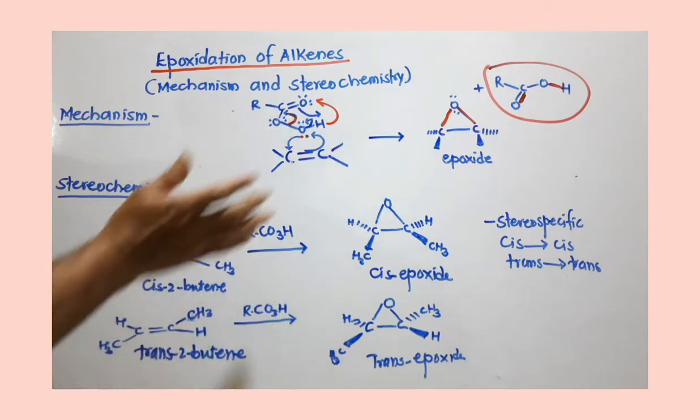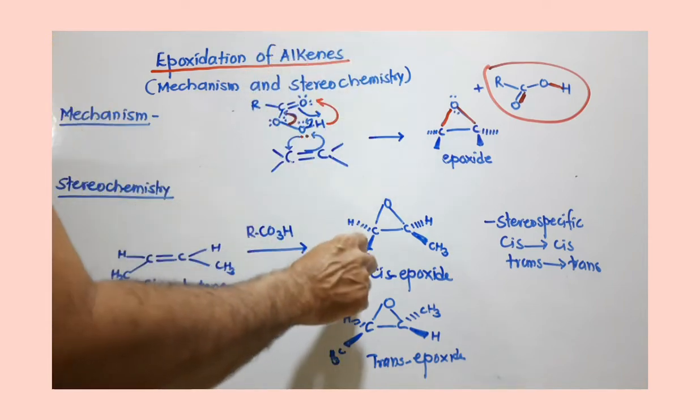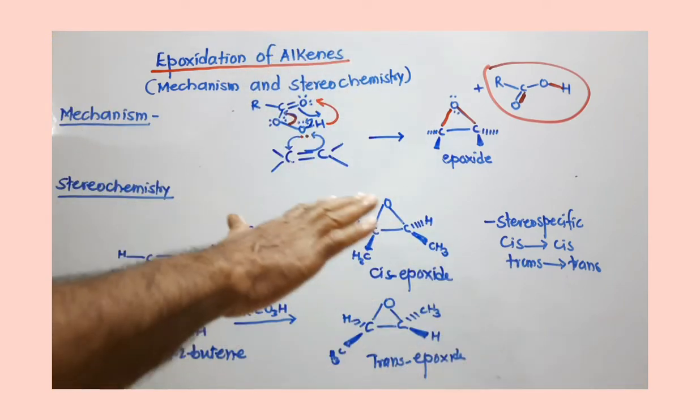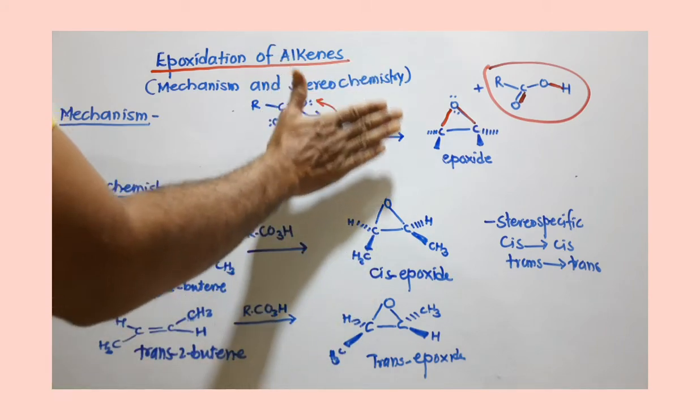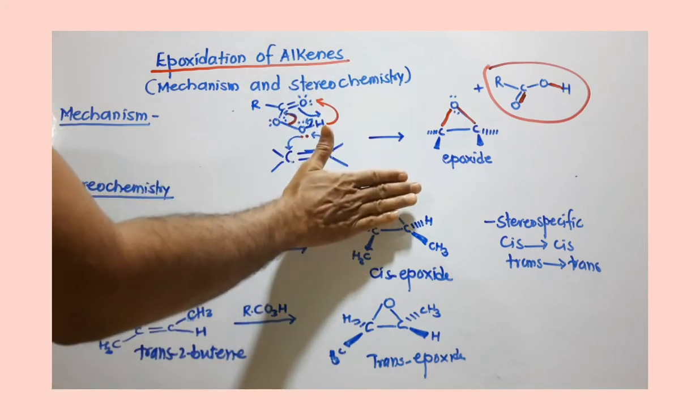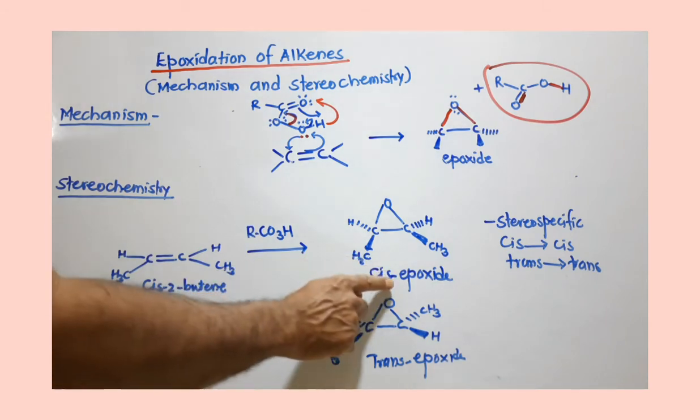So you have to keep their positions as it is. So H will go that side behind the plane. This H will go that side behind the plane and CH3 will project above the plane. So this is the situation where similar groups are actually lying above the plane, toward the same side. So this is cis. So cis gives cis epoxide.